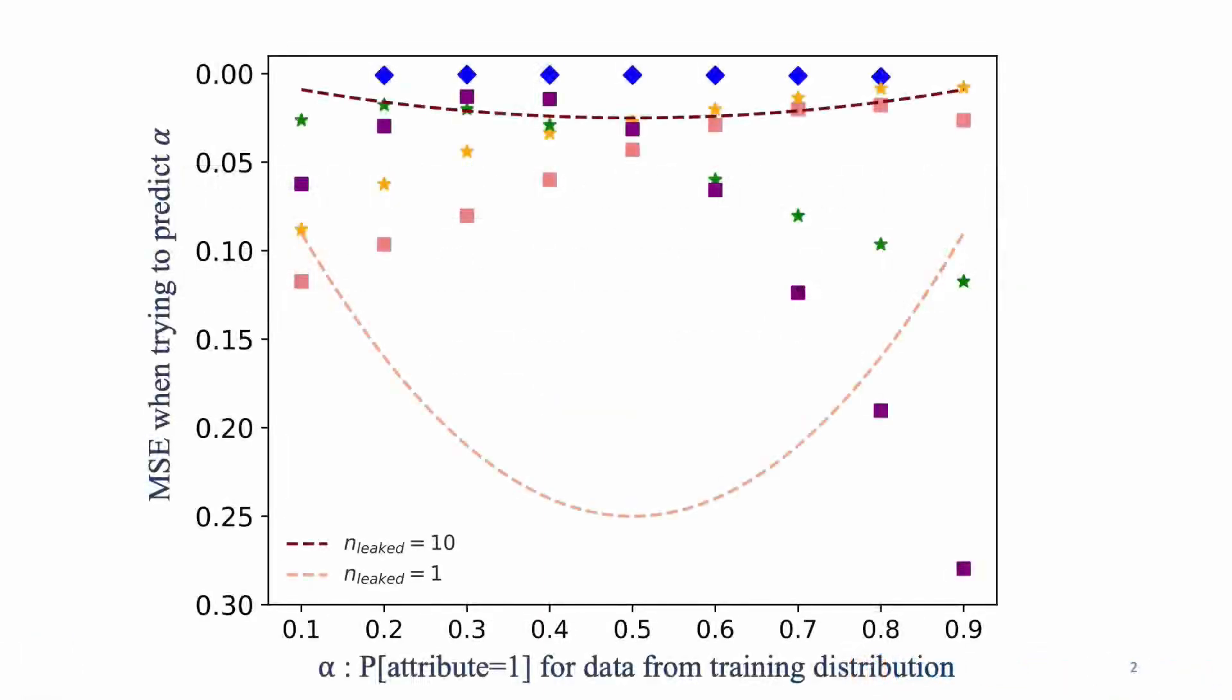What you see on the x-axis here is alpha, and that's essentially the probability of a particular attribute being true for any given sample that you take from the training distribution of a given machine learning model. On the y-axis is the mean square error of an adversary that looks at the same model and then tries to predict this alpha. So let's say you have face images, then the alpha for your specific scenario could be the probability of that person being a female, and this is what will vary in these experiments.